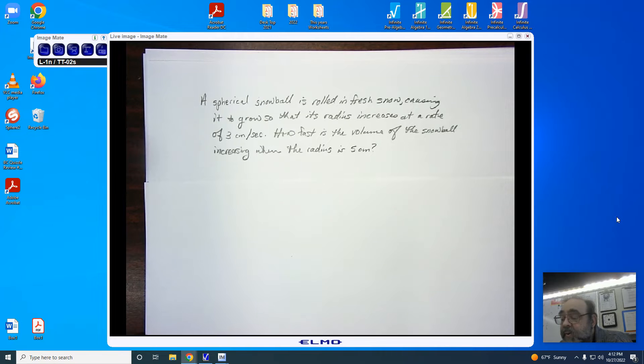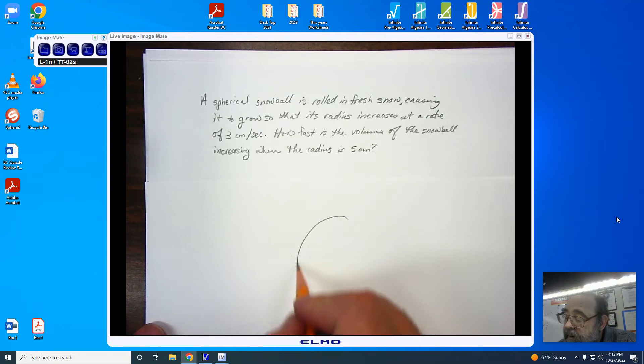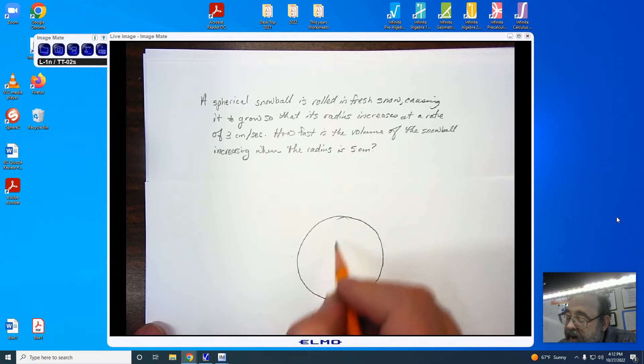Since the radius is growing, we know that rate is a positive value. How fast is the volume of the snowball increasing when the radius is 5 centimeters? Once again, the formula is going to be given to you. I'm going to start with my sphere picture.